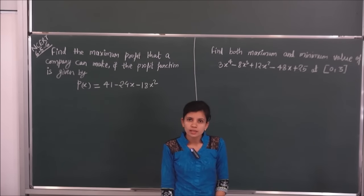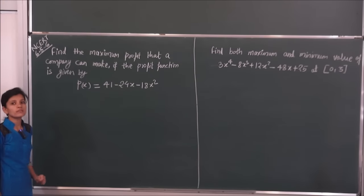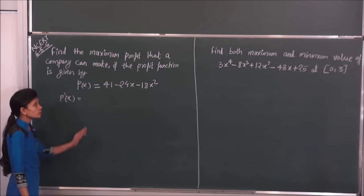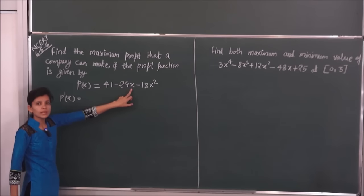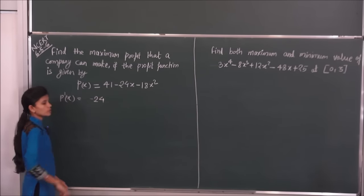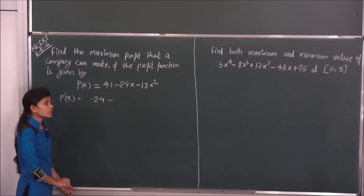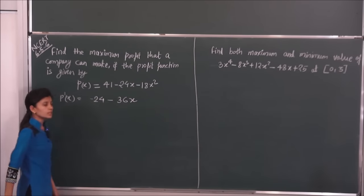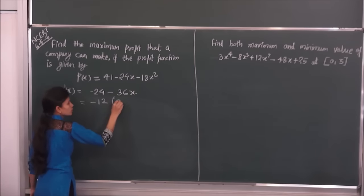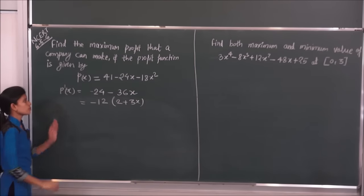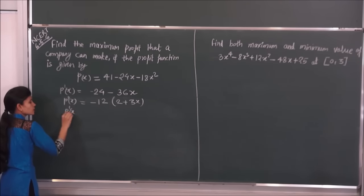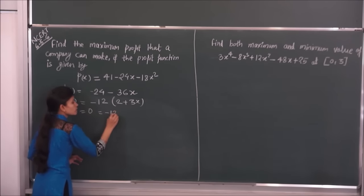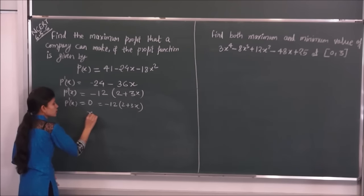किसी भी function का maxima और minima find करने के लिए सबसे पहले हमें first derivative find करना है, x के respect में differentiate करना है। तो P'(x) find करते हैं: 41 constant का differentiation 0 मिलेगा, -24x का differentiation -24 मिलेगा, -18x² का differentiation -36x मिलेगा। यहाँ से -12 common लेते हैं तो P'(x) = -12(2 + 3x) मिल जाएगा।